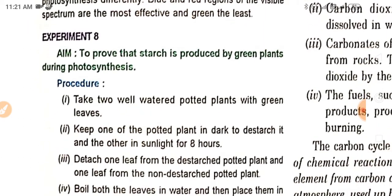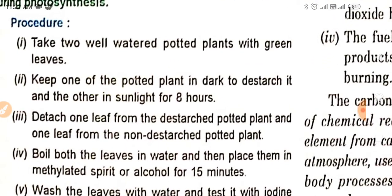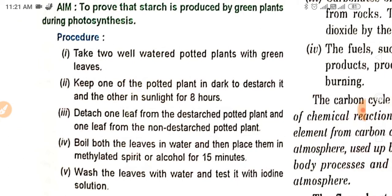The next experiment is to prove that starch is produced by green plants during photosynthesis. This is a very simple experiment, and I hope you read it in your class 6 also. For this experiment, you have to take two well-watered potted plants with green leaves. Keep one of the potted plants in the dark to destarch it and the other in sunlight for eight hours. Destarch one leaf from the destarched potted plant and one leaf from the non-destarched potted plant.